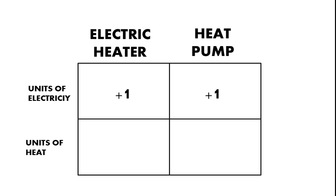Likewise, a heat pump may take plus one units. But the heat that we get out of an electric heater can only get to plus one units of heat. This is because energy is conserved.